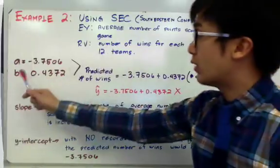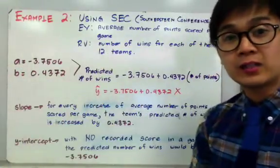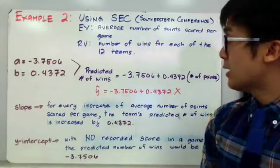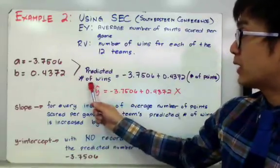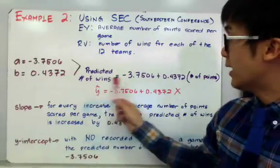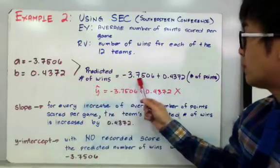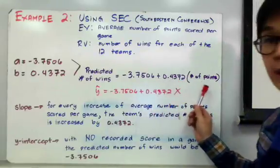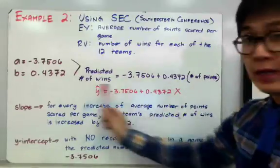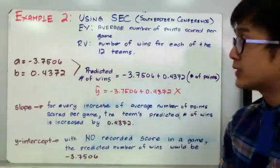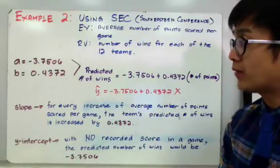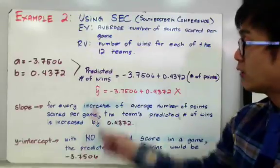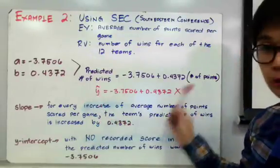This is now our value of a and b. Plugging it into our linear model y-hat equals a plus bx, we can say that our predicted number of wins equals negative 3.7506 plus 0.4372 times the number of points. This is now our linear model based on the samples used in our graphing calculator, and we can now predict the value of y given the value of x, which is the number of points.